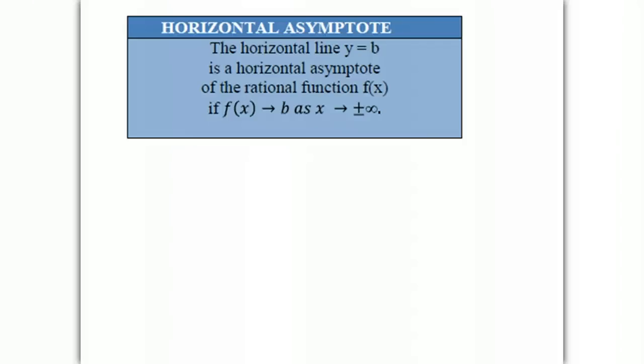Today we'll be working on horizontal asymptotes. The horizontal line y equals b is a horizontal asymptote of the rational function f(x) if f(x) approaches b as x approaches positive or negative infinity.